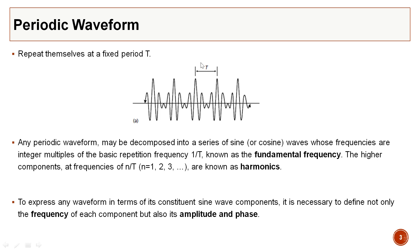Periodic waveforms are those which repeat at a fixed period T. Periodic waveforms can be decomposed into a series of sine or cosine waves whose frequencies are integer multiples of the fundamental frequency 1/T. The higher components, given as n/T where n equals 1, 2, and 3, are known as harmonics.